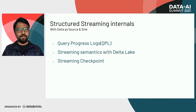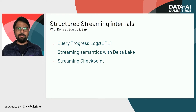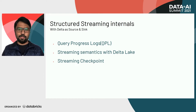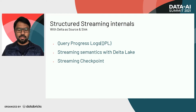As part of structured streaming internals, with Delta as both source and sink, we'll focus on three things. First, query progress logs — a bunch of metrics that Spark structured streaming emits after every micro batch. Second, streaming semantics with Delta Lake, where we'll correlate query progress logs back to your Delta table history. Finally, we'll inspect the checkpoint directory itself to see what gets persisted and how it correlates back to query progress logs and Delta table history.